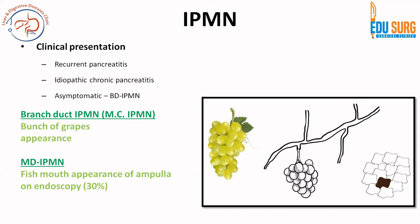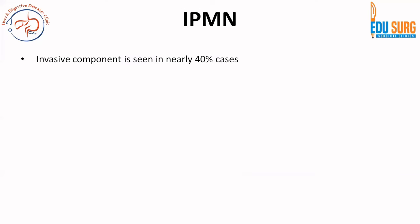Clinical presentation of IPMN can be asymptomatic in cases of branch duct IPMN, or it can lead to recurrent pancreatitis. A very common and confusing differential diagnosis is chronic pancreatitis, because chronic pancreatitis also dilates the main pancreatic duct. Branch duct IPMN is the most common type and has a bunch-of-grapes appearance because the cysts are oblong in shape. In main duct IPMN, there can be a fish-mouth appearance on endoscopy, seen in only 30% of cases.